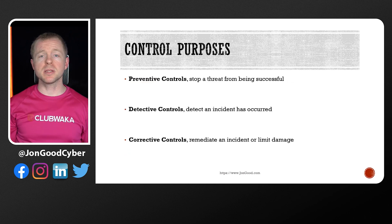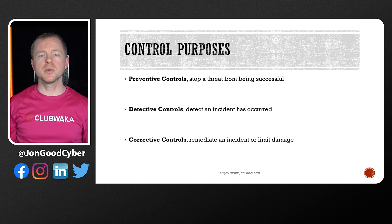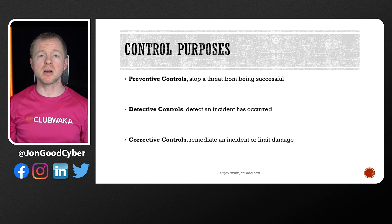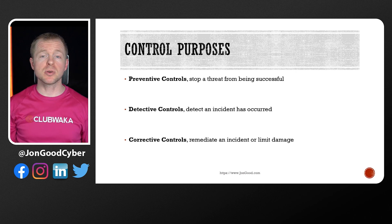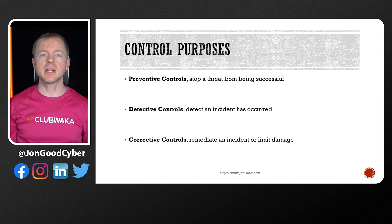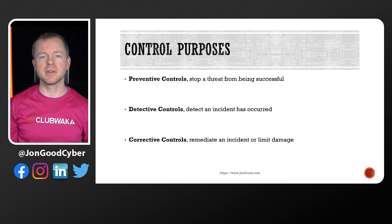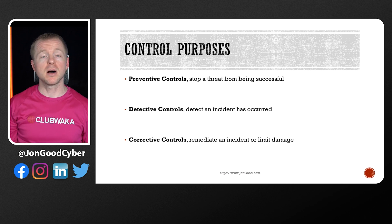Now to address the second question — there are a few purposes of controls that you need to be aware of. Preventive controls are those that prevent a threat from being successful; intrusion prevention systems are a great example. Detective controls allow us to look into incidents that have occurred and go back and analyze what happened. An intrusion detection system is a good example of this because it will only alert us of an incident and won't stop it. SIEM tools would also be a good example of detective controls.